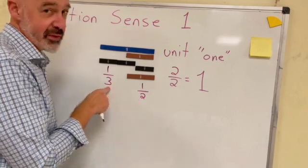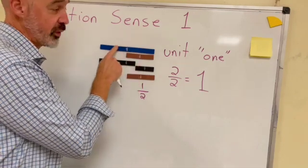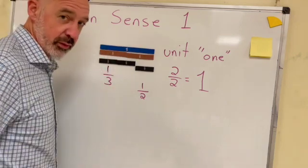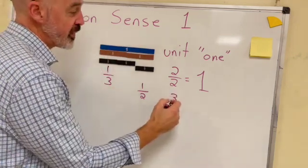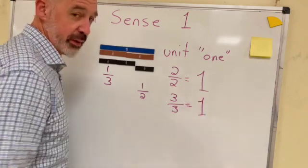Now, the reason the three makes sense is because it takes three parts to make the one whole. Versus with halves, it takes two parts to make the one whole. So it's three parts out of three to make that one whole.